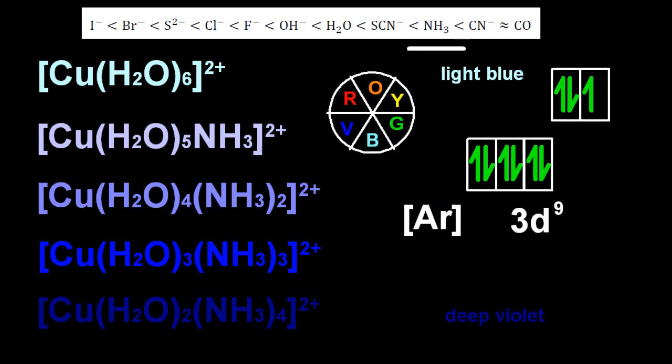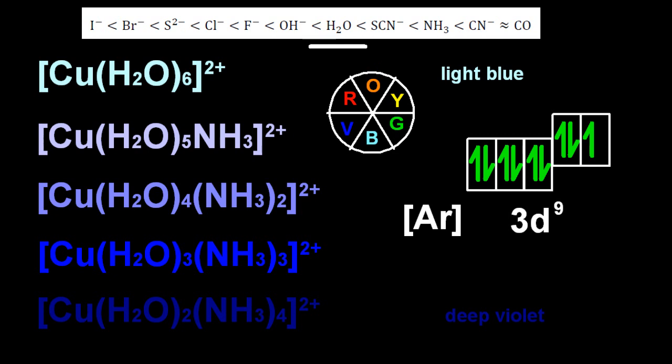There's my colour wheel. The first one there is a light blue colour. So what sort of light was absorbed? Well, if it's a light blue colour, then it must have absorbed orange light. Because that's opposite on the colour wheel. And as we go down, more and more ammonia is replacing the water ligands. So the split's going to be bigger. And so it's deep violet. Right down at the bottom one is the colour. So what was absorbed to make it look deep violet? Well, that has to be yellow. It has to be a higher energy light than orange because it's a bigger split. Yellow is higher energy than orange.